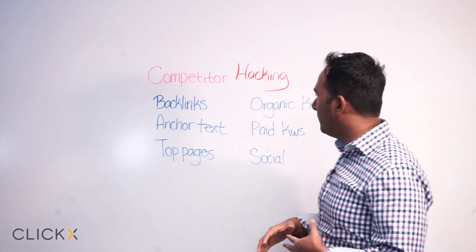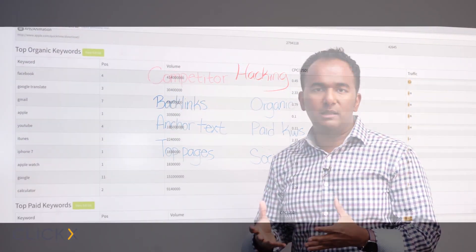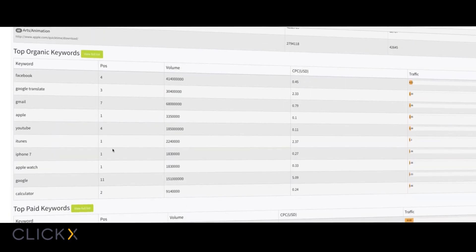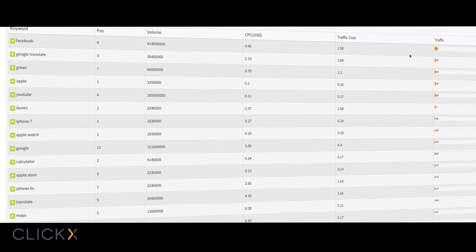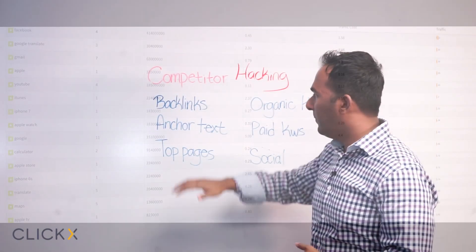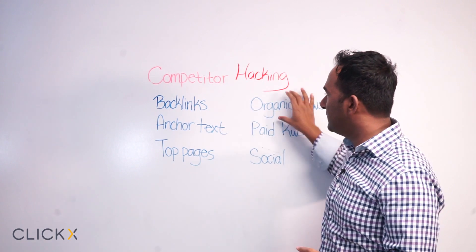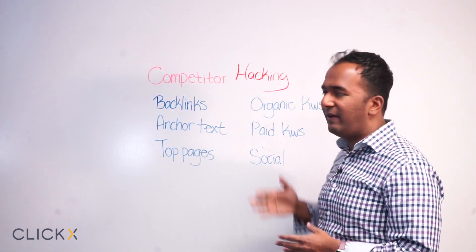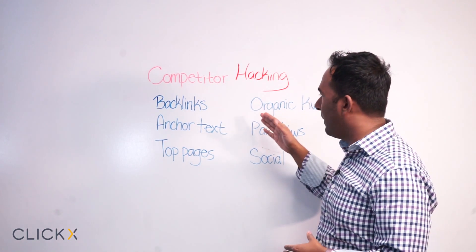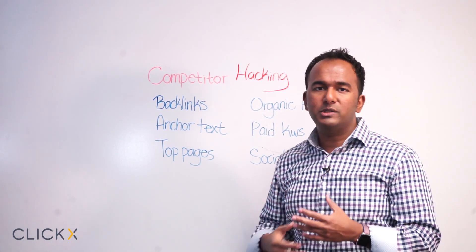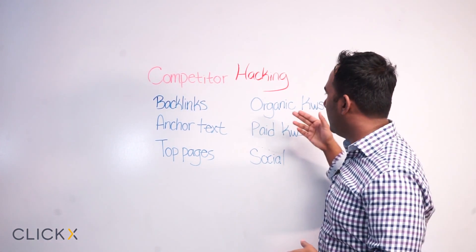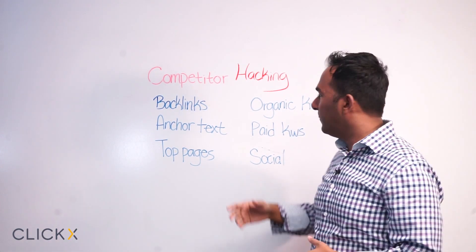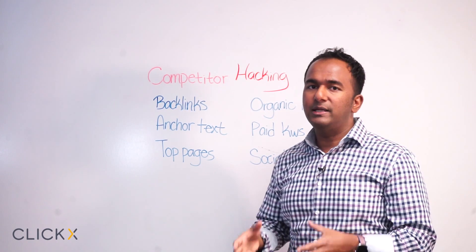Another important data point is the organic keywords. Inside ClickX, there's a way to see the organic keywords they rank for today. You want to know what keywords they're working hard toward — this reflects their content marketing strategy, their backlinks, and their anchor text. This is the most valuable information you can get. No matter how much money they're spending or how much content they're writing, this gives you real-time insight into what they're doing. It's a lot easier to see what your competitor does than to guess.